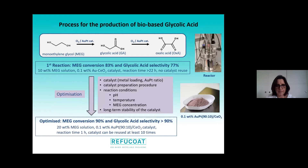You can see on top the reaction scheme, and you see that glycolic acid is not the end product of the reaction sequence but is an intermediate. So we have to ensure that the second hydroxyl group remains intact and is not further oxidized to oxalic acid. We decided to use gold-platinum catalysts, and in our first reaction we already had glycol conversion of more than 80% and glycolic acid selectivity of almost 80%. However, the reaction time was too long to be of interest.